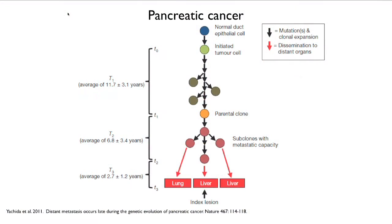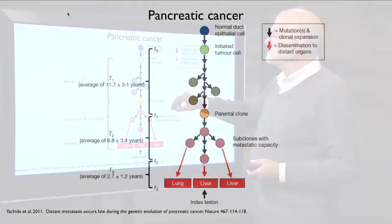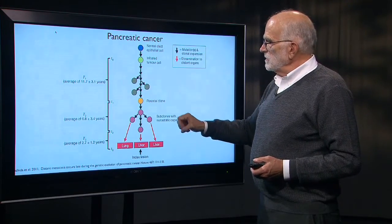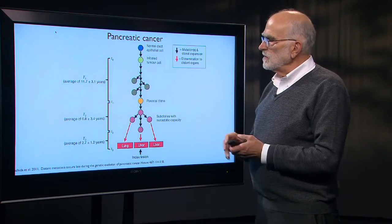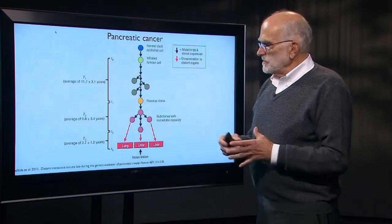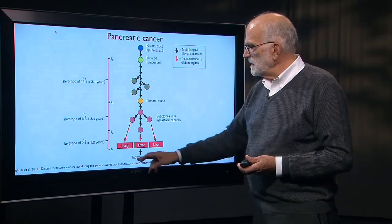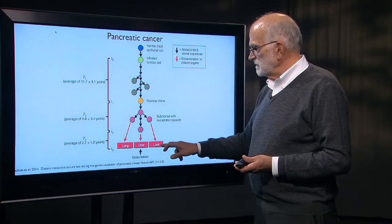This is the same case, the same data. What you see here is a progression from normal duct epithelial cells in the pancreas to the first step of a tumor cell that can grow. That leads to a parental clone which can expand. Then there are subclones with metastatic capacity, and then they move into lung, liver, and liver. The index lesion, the one that the oncologist picked up and said, oh my goodness, this guy has cancer, was in the liver.